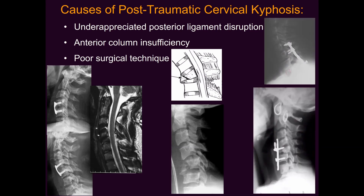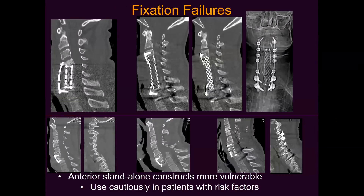Even if everything is recognized appropriately and the right treatment is selected, poor surgical technique or decision-making can be problematic. Fixation failures can occur, particularly with standalone anterior fixation, which is appropriate in some instances in trauma but tends to be biomechanically less favorable in some situations — particularly in patients with metabolic bone issues. Hardware pullout and instrumentation failure can occur, or as in the bottom case, where the patient didn't even have a good reduction of their facet dislocation. Standalone anterior fixation without the added stability from reduction of the facet fracture dislocation is probably not the best situation for a standalone procedure.